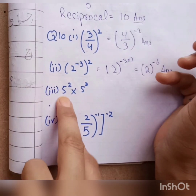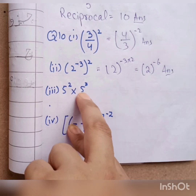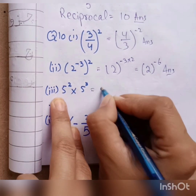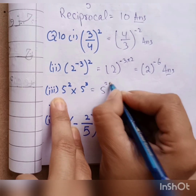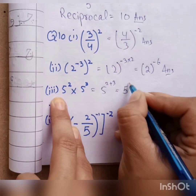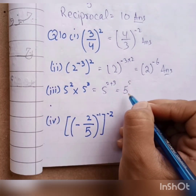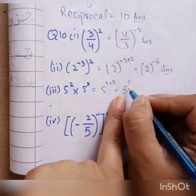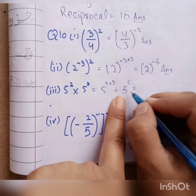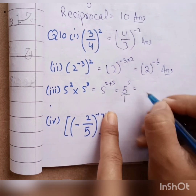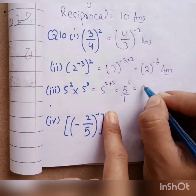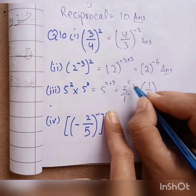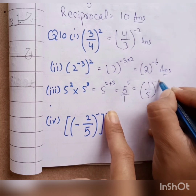Next, we have 5 power 2 multiplied by 5 power 3. The base is the same, so we take the same base and add the powers: 2 plus 3 gives power 5. In the next step, since there is nothing below, denominator is 1. When we change its position, it becomes 1 by 5, and the positive power 5 becomes negative 5.